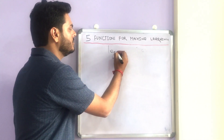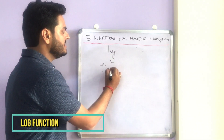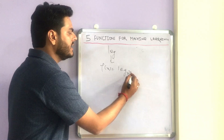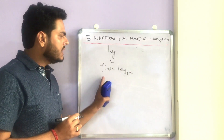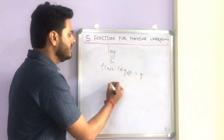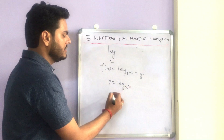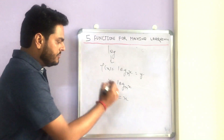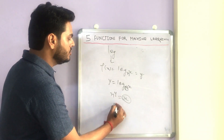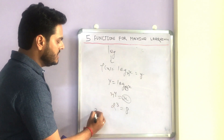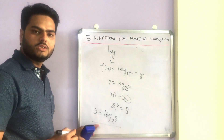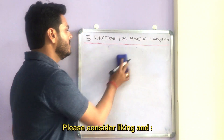The next function I want to discuss is the log function. A log function is represented as f(x) = log(x), and log functions normally come with a base — a number like n. The meaning of this log function is: to what power should n be raised so that we get x? For example, if y = log base n of x, that means n to the power y equals x. Plugging in some values: 2 to the power 3 equals 8, which means 3 = log base 2 of 8.